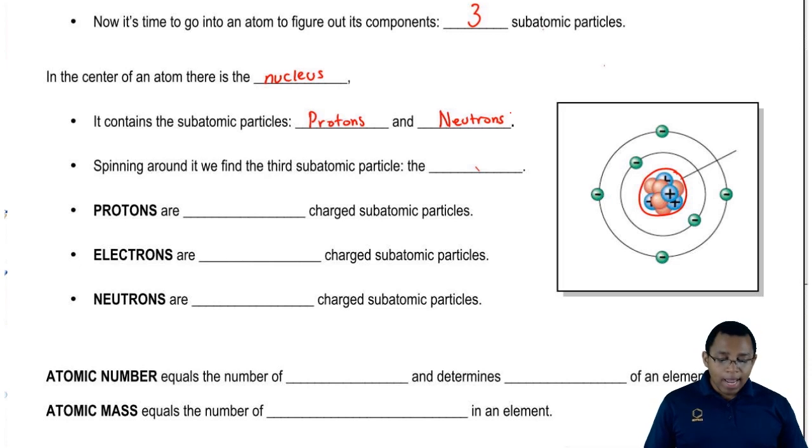Spinning around it, we find the third subatomic particle. We have these small green negatively charged balls, subatomic particles flying around our nucleus. These are the electrons.